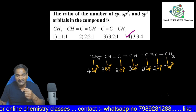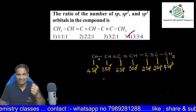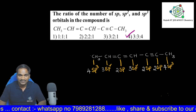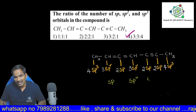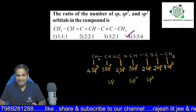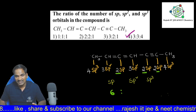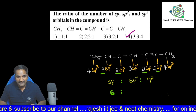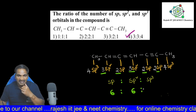So sp hybridization means two sps will form, sp3 means four sp3s will form. Now they are asking about the ratio — we need to check the ratio of hybridizations for the given carbon atoms in this hydrocarbon. For sp orbitals: two, two, two, two — total six. For sp2 orbitals: three and three — total six sp2s are there.